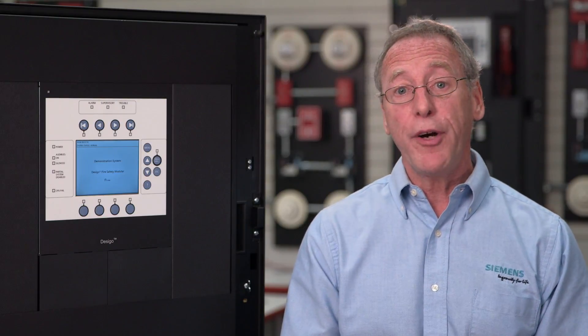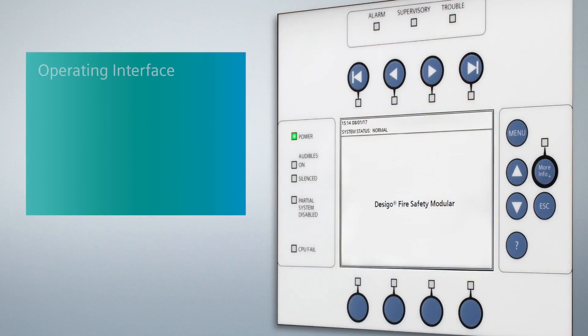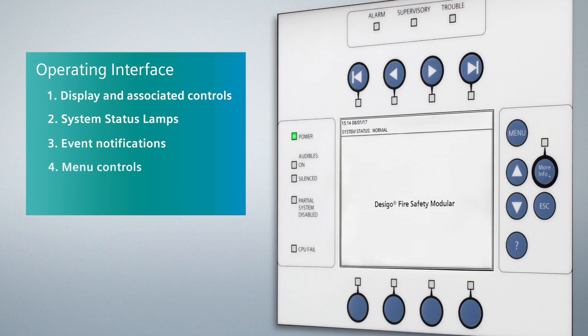To begin, I will describe the operating interface and go over its main components and features. The operating unit has five main sections: display and associated controls, system status lamps, event notifications, menu controls, and internal buzzer.